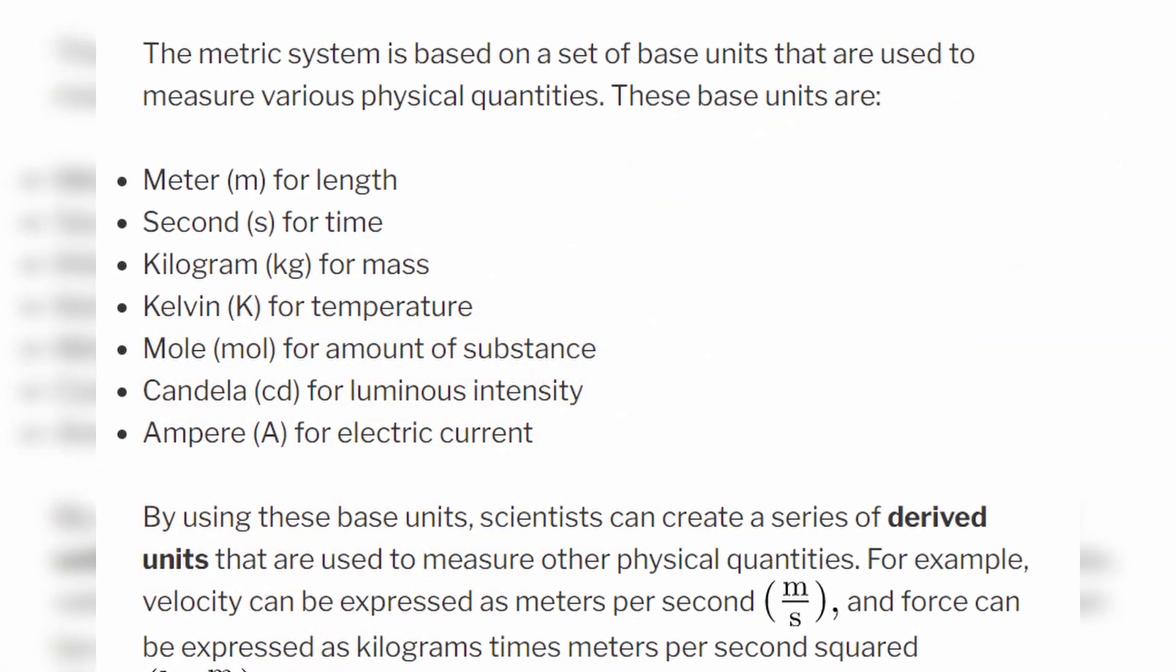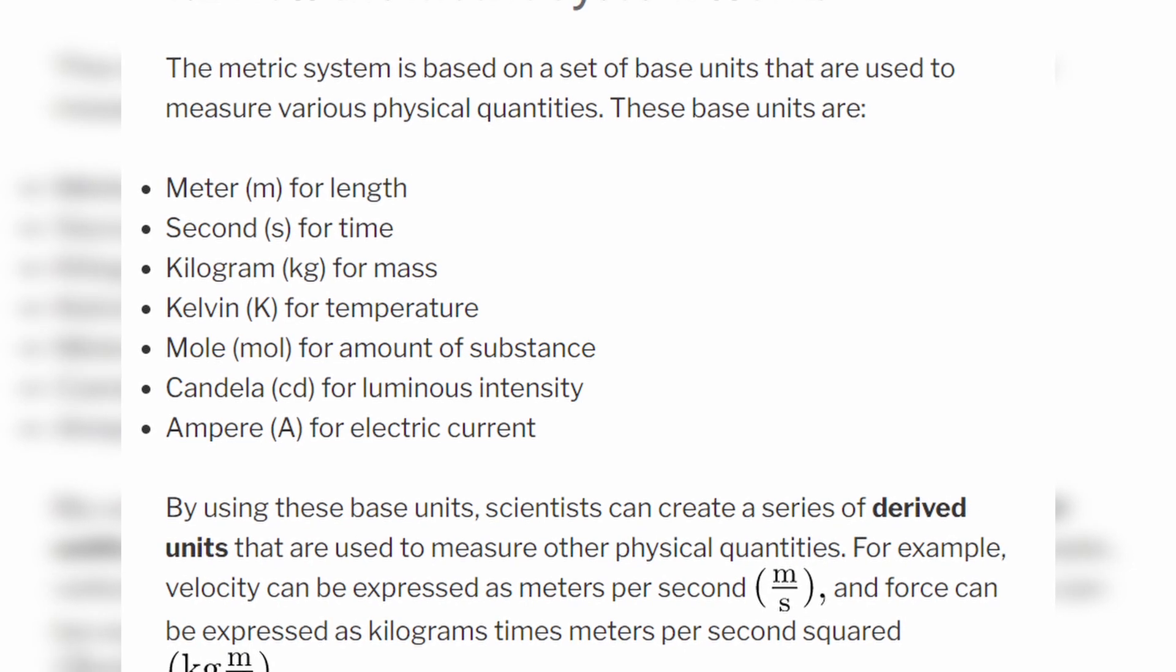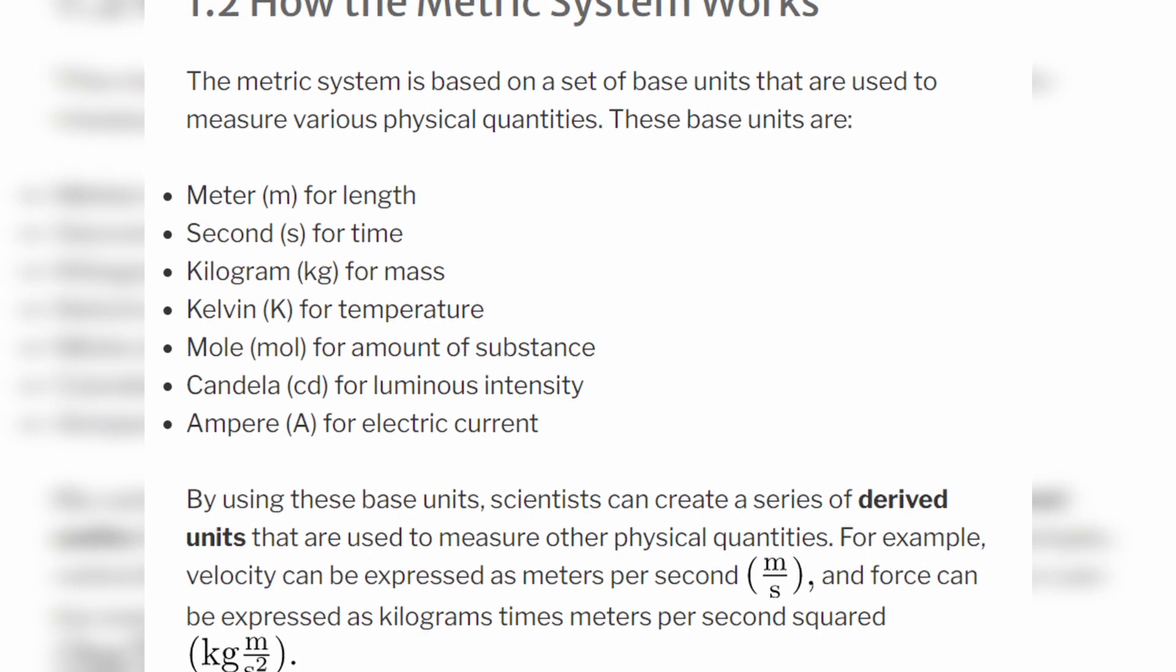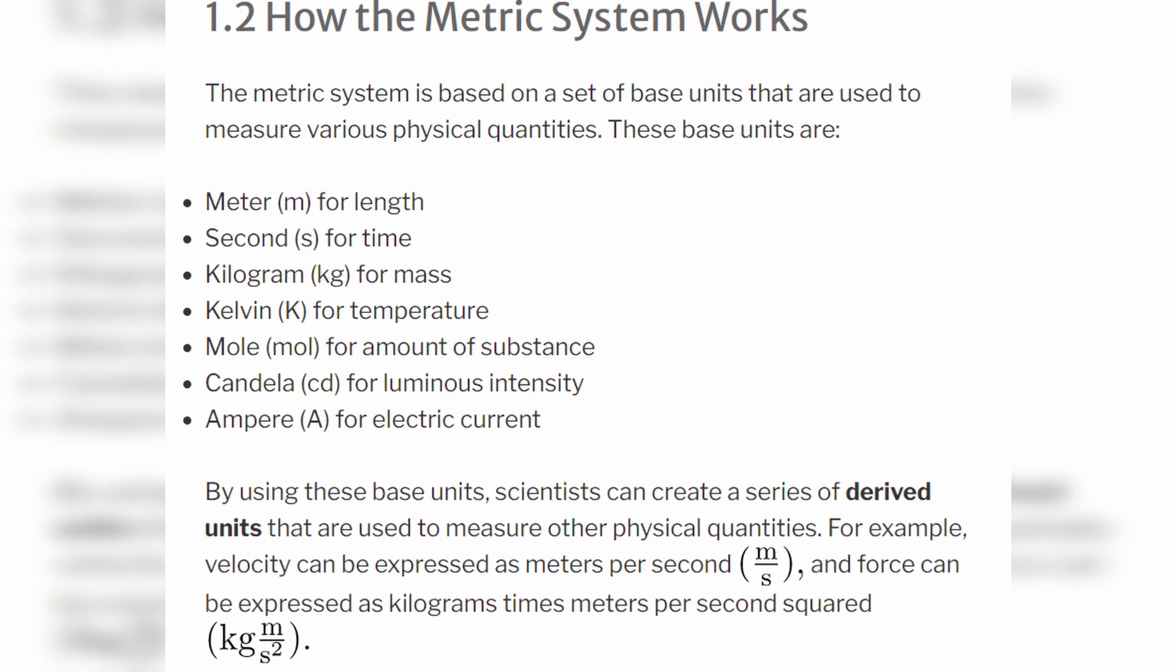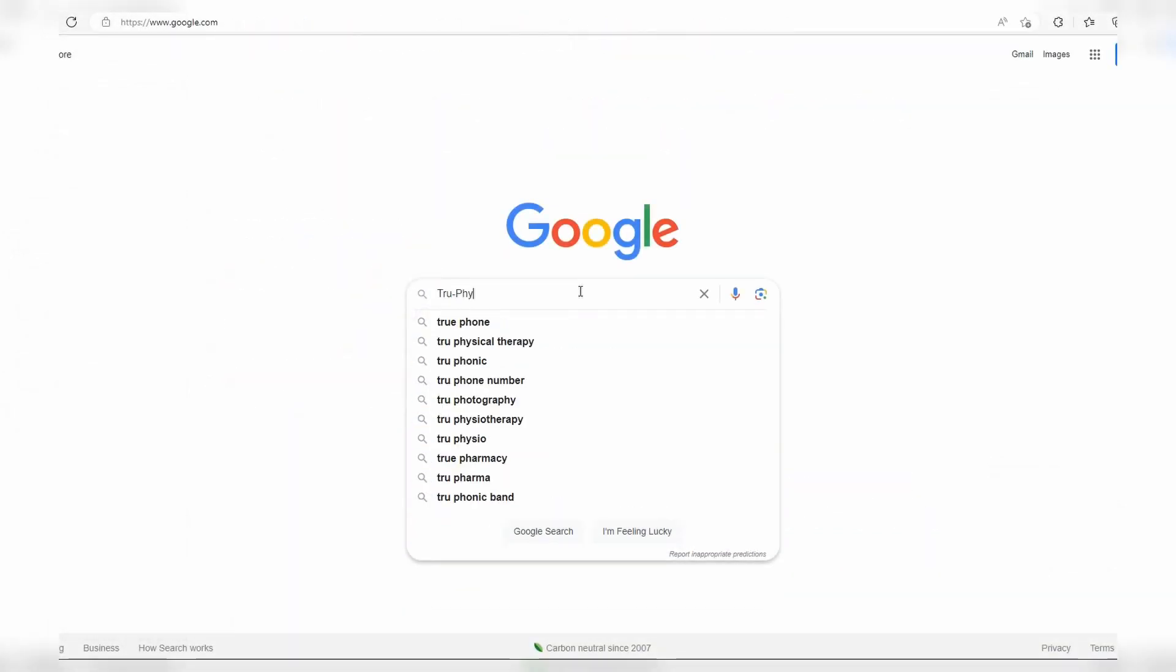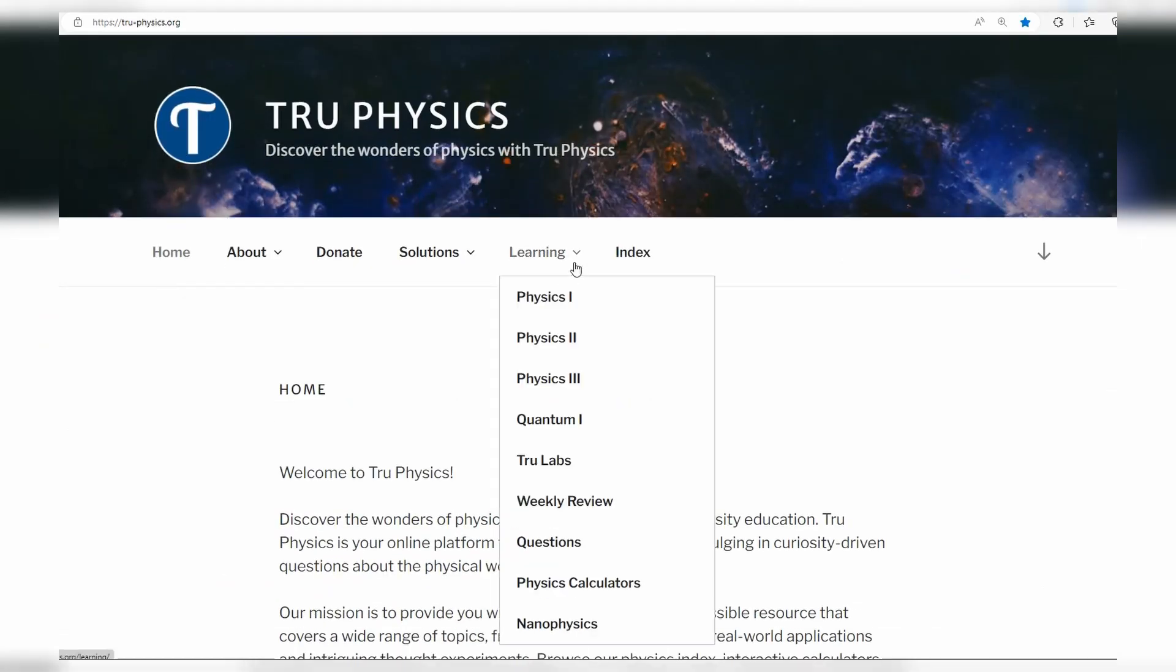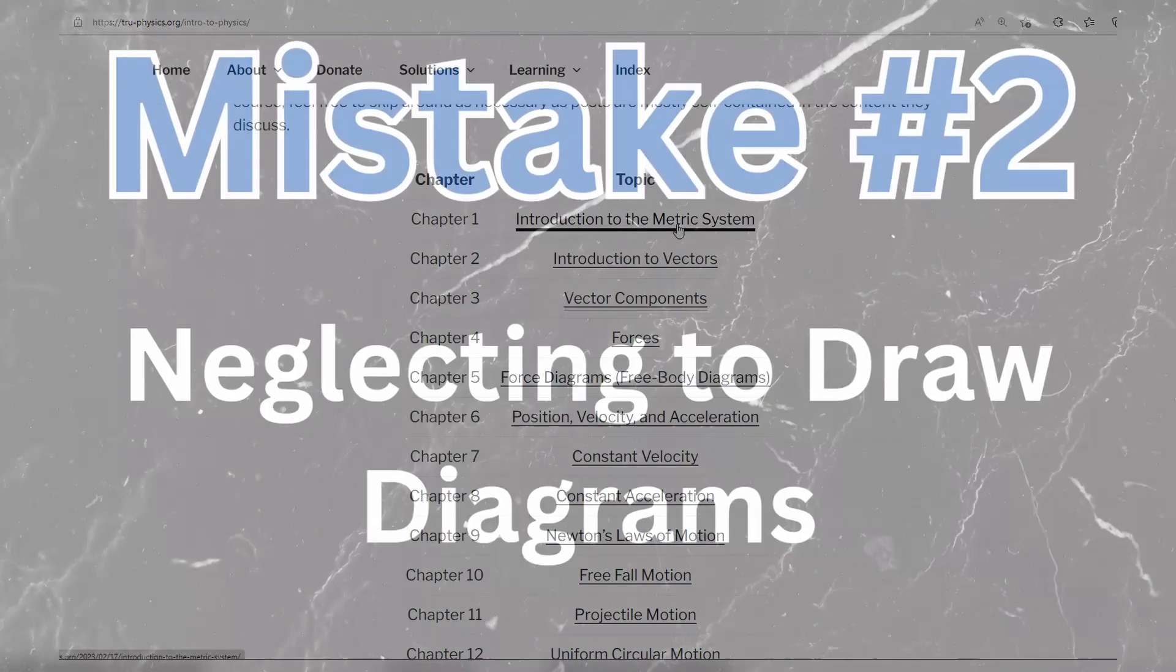With base units, it's super important that any lengths, for example, are converted into meters, whereas any masses are converted into kilograms. If you know your SI base units and you convert all of your numbers into these SI base units, that's going to eliminate half the errors that you get in your calculations. If you're not familiar or comfortable with the SI base units just yet, definitely check out my website at truephysics.org. Go to the learning tab and select Physics 1. Under chapter 1, there's a whole introduction to the metric system.